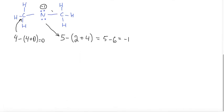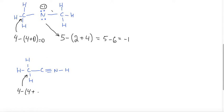Let's do one more example. I have hydrogen attached to a carbon, and this carbon is attached to another carbon that's attached to a nitrogen, and the nitrogen is attached to hydrogen. The carbon to the left has 4 valence electrons, 4 bonds, and no lone electrons — so it is 0. For the carbon next to it, it also has 4 valence electrons, 1 bond to the left and 3 bonds to the right — 4 bonds altogether — and no lone electrons. So it is happy as well; it has no formal charge.